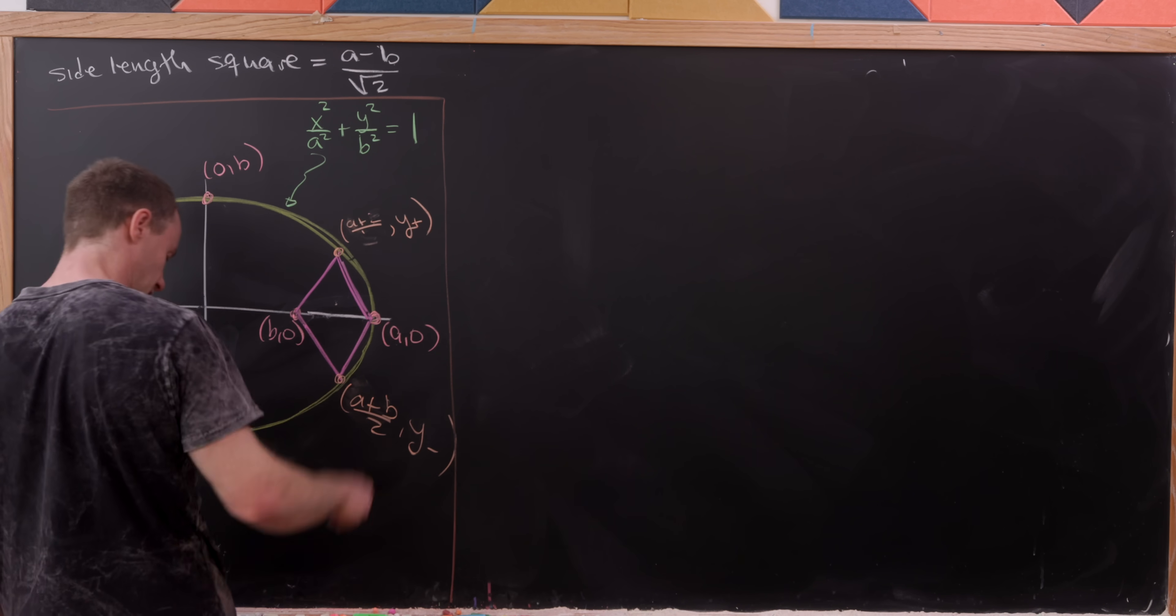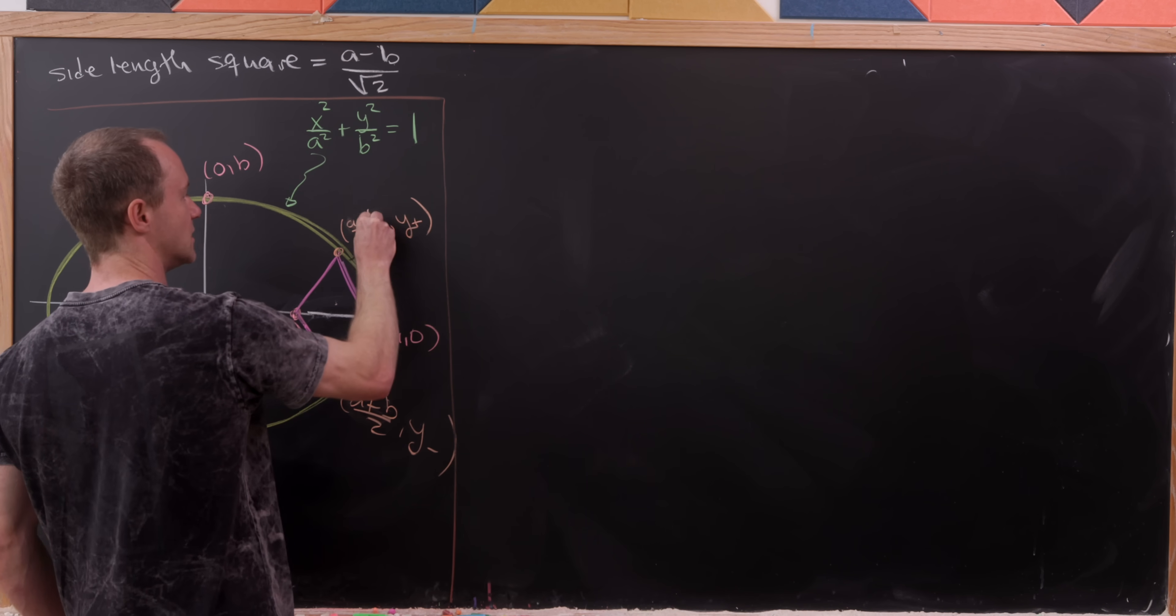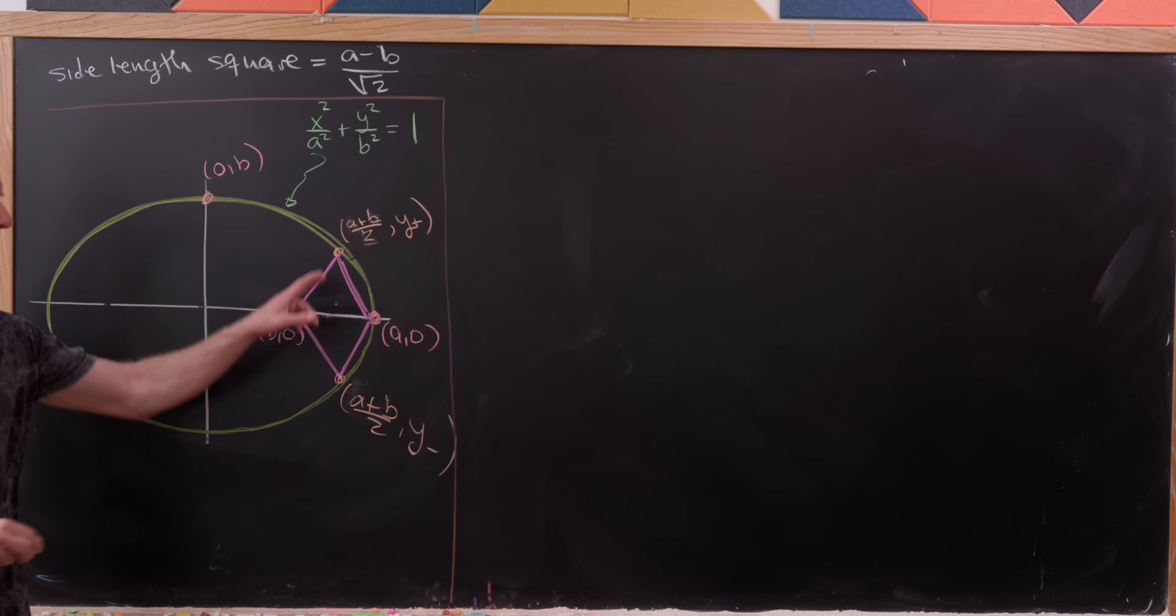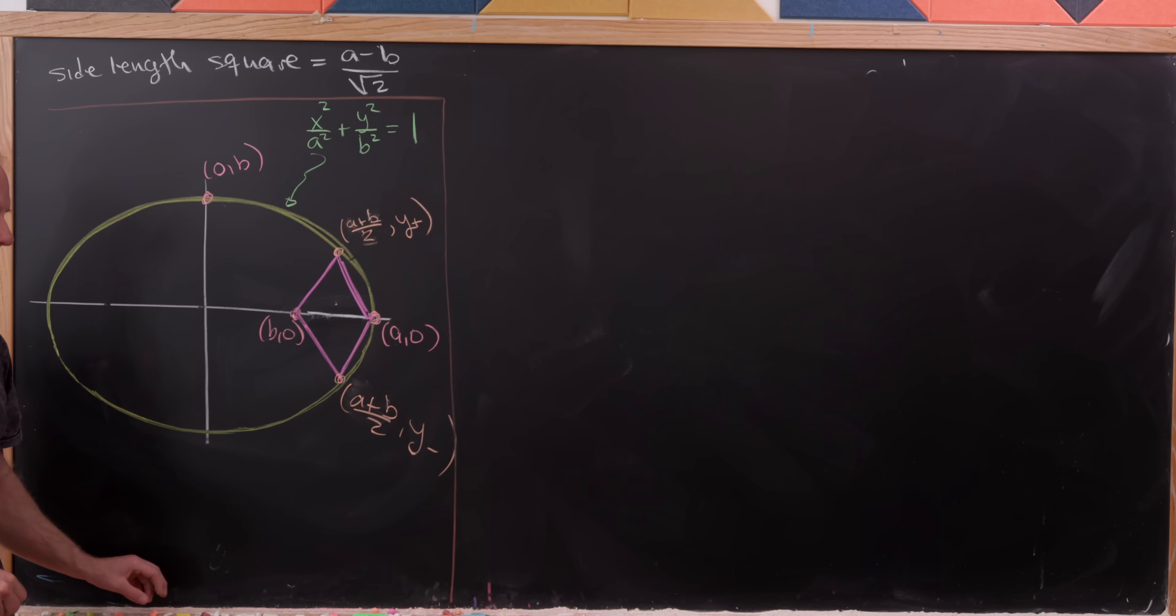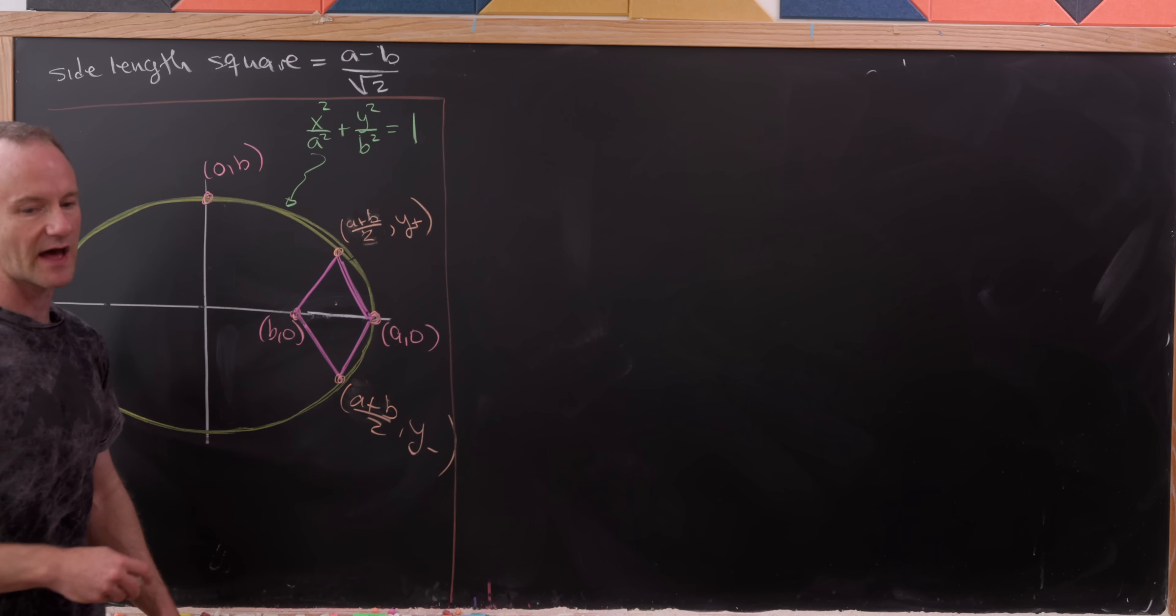So we've got (a+b)/2, what I'll call y+, that'll be the y coordinate. And here we have (a+b)/2, y−, that'll be the y coordinate for that.